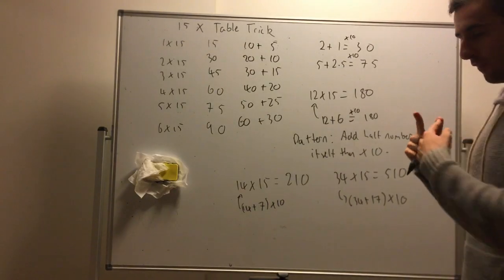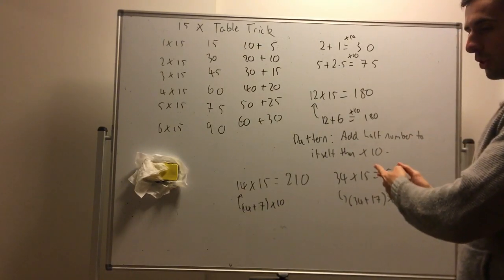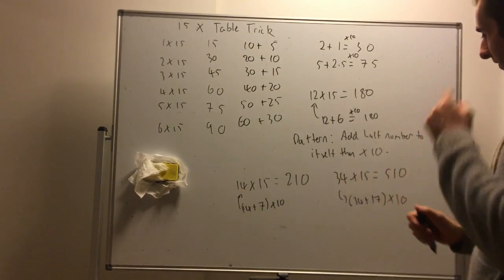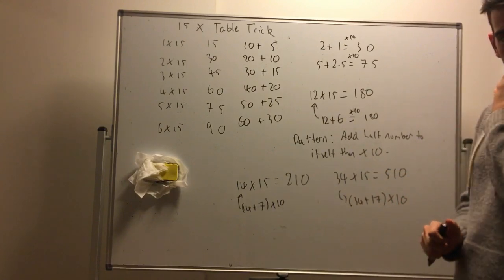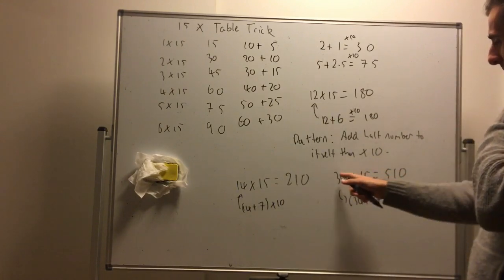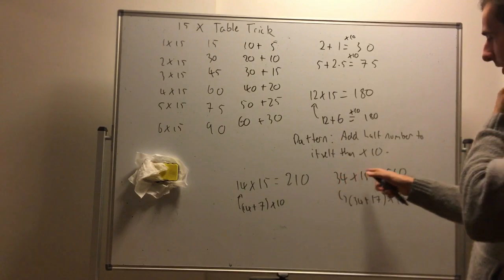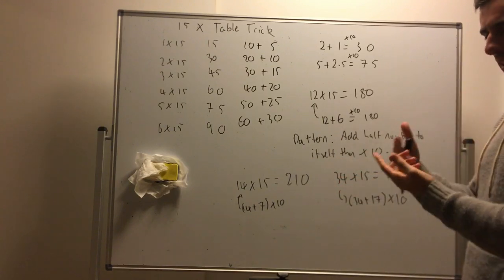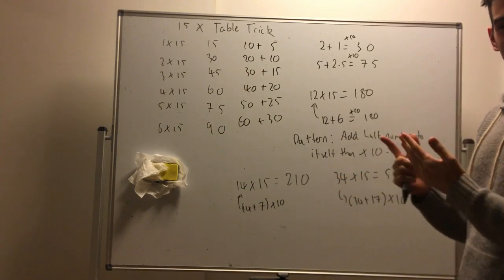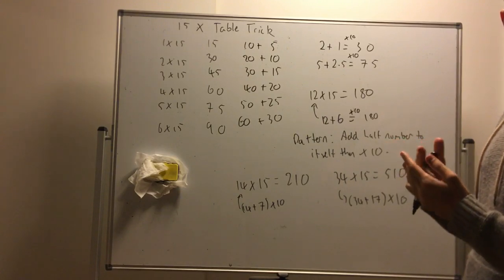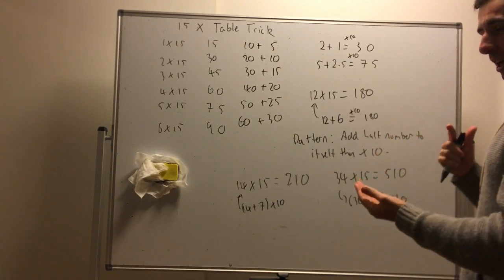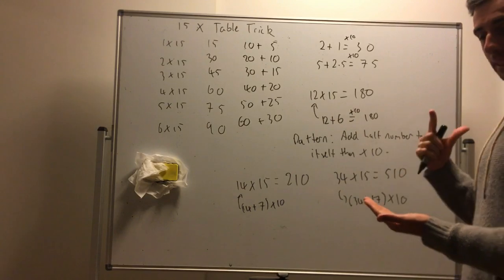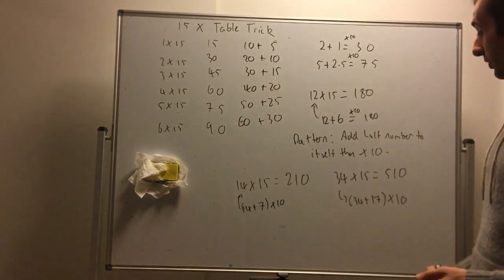So you can see this is really easy to do in your head because what we're doing instead of trying to do 34 times 15 manually, because that's 10 times 34 or 340, 5 times 34. What's that? 170. And then adding those big numbers in your head. What we're doing is adding small numbers in our head and then doing a times 10 multiplication. Times 10 is probably one of the easiest multiplication you can do.